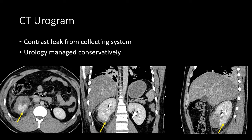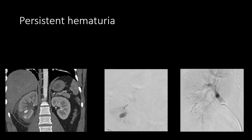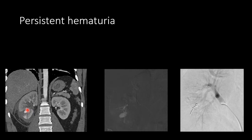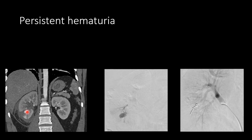Because it was a small leak, urology opted not to place a stent to decompress the collecting system, and instead managed this conservatively. However, the patient had persistent hematuria, raising concern for communication of the collecting system with a vascular structure. A CTA was obtained and showed a pseudoaneurysm within the lower pole of the kidney, which may have been leaking blood into the collecting system, accounting for the persistent hematuria. The patient was taken to angiography, which confirmed the pseudoaneurysm, and it was treated with coil embolization.